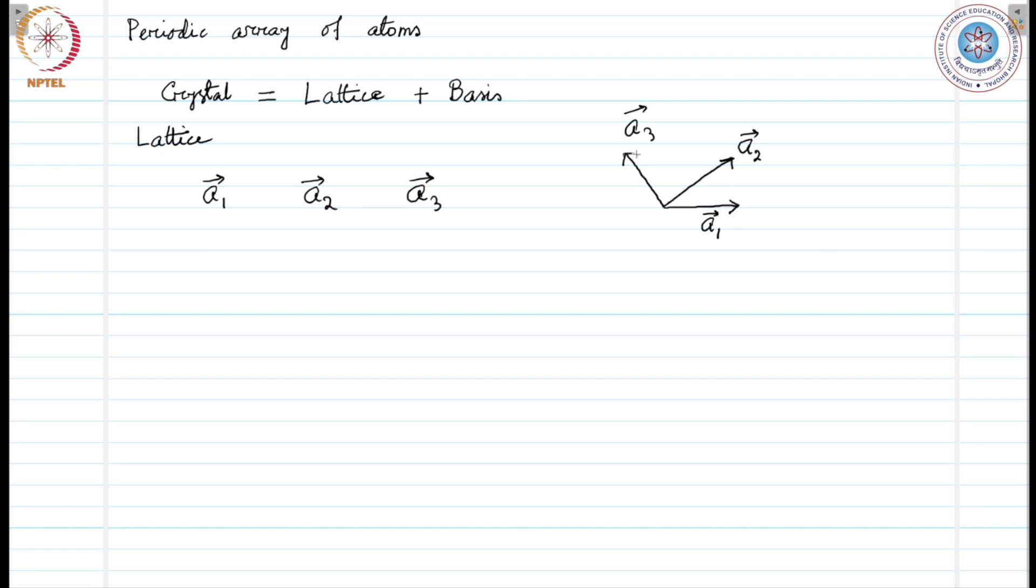And that will make a parallelepiped in a three-dimensional space. And that parallelepiped is called the cell or the unit cell of the system.